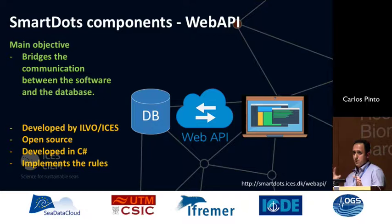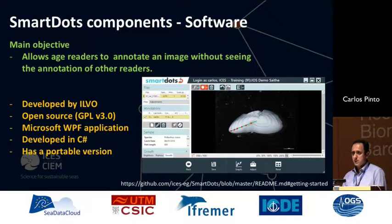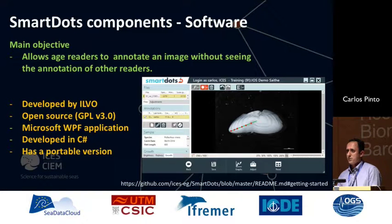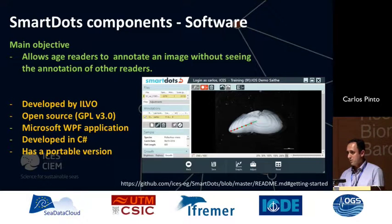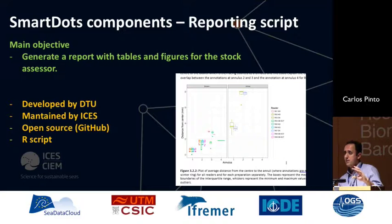This is the way the new software connects to the database. ILVO open sourced their application, which is developed as a desktop application. Since some readers had trouble installing the software, a portable version was also developed. The software connects to the web API and the web API connects to the database and web interface. Finally, the last module is the reporting: once everything is done, the report is an R script that is also on GitHub. It was developed by DTU and ICES is now maintaining it, but it is accessible to the community so they can suggest changes to the R code.